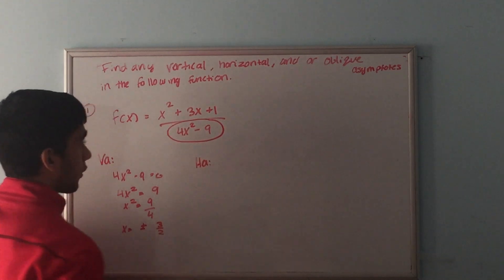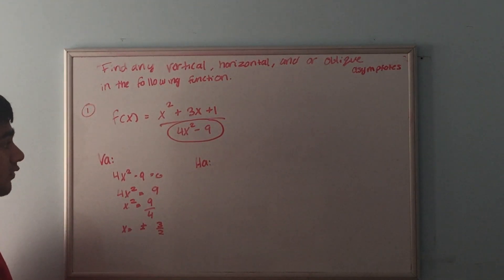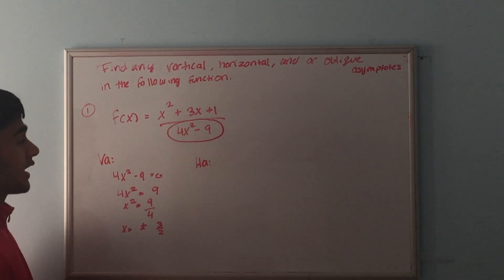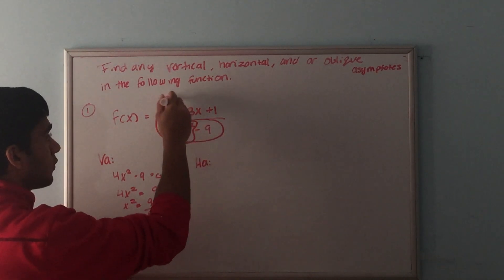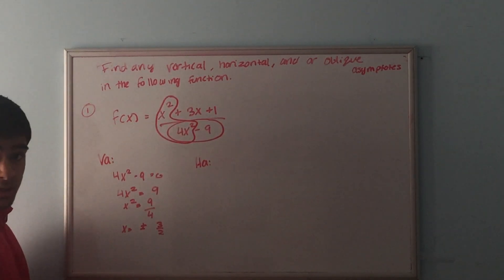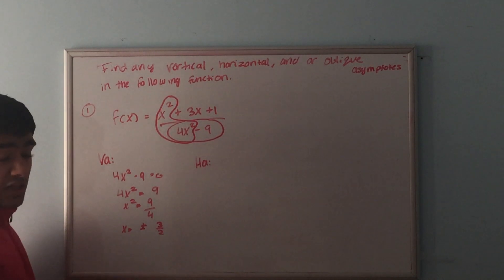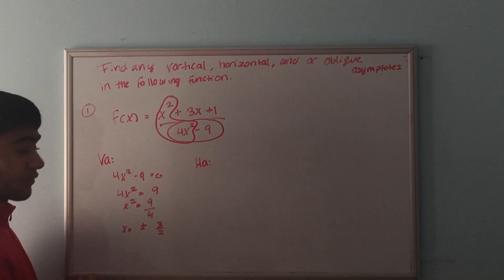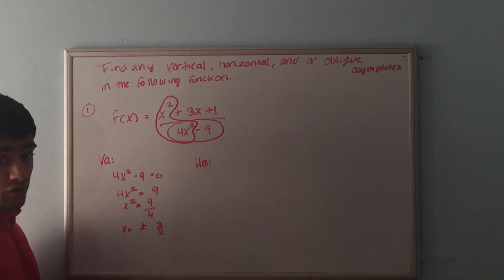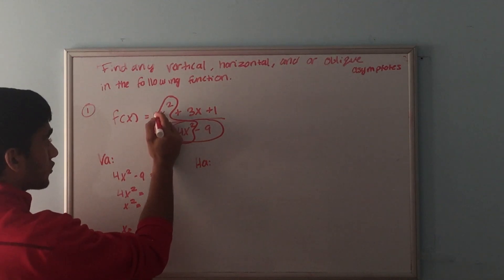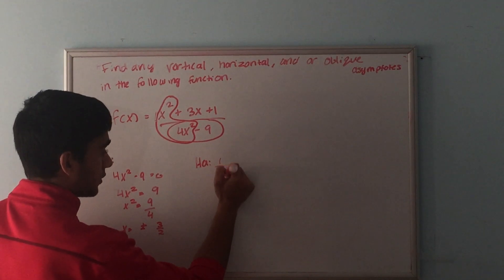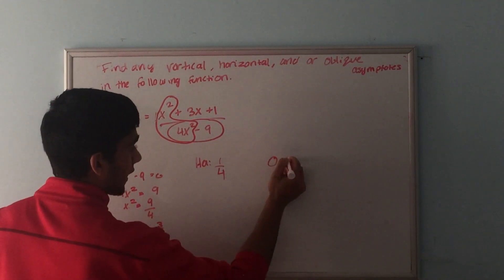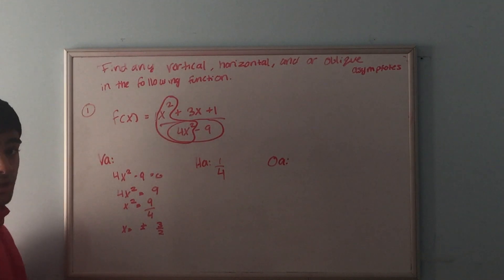Now let's find the horizontal asymptote. Notice that the highest power variable in the numerator is the same as in the denominator — we get x squared and 4x squared. A horizontal asymptote exists when the powers are equal. We look at the ratio of the leading coefficients: the coefficient in front of x squared in the numerator is 1, and in the denominator is 4, so the horizontal asymptote is y = 1/4.